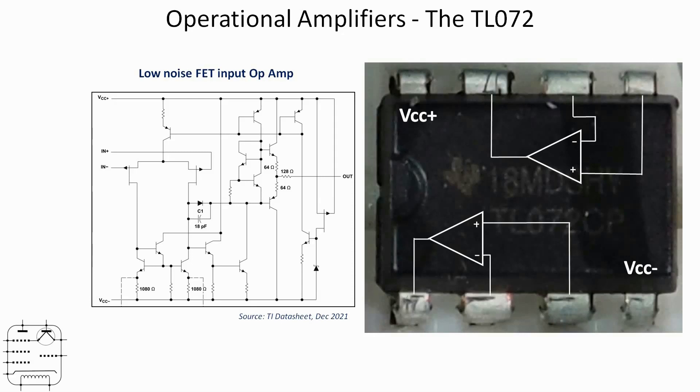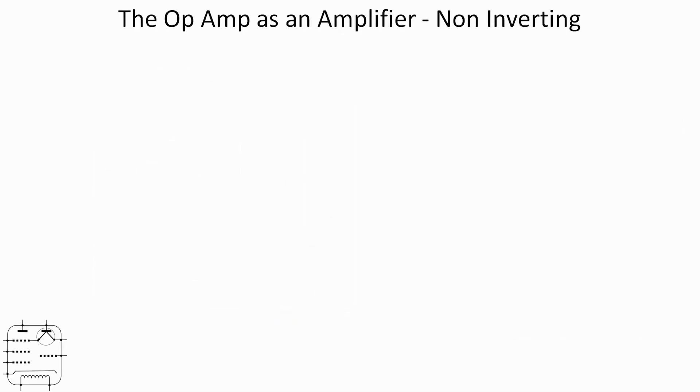That's the op amp. So let's now look at the first circuit we're going to use, and let's look at it as an amplifier. After all, that's what it does. The first version we're going to look at is what's called the non-inverting version.